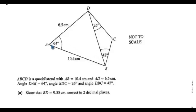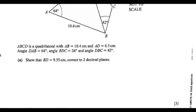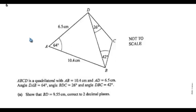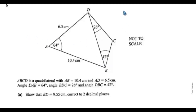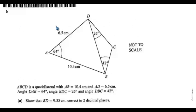We can draw triangle ABD. From triangle ABD we have the included angle, so we can use the cosine rule because we want to find BD. Let's write the solution here so we can refer to the diagram.